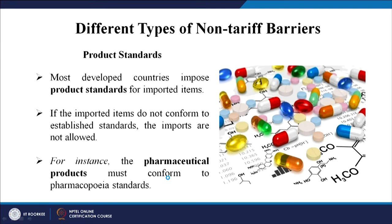Some other types of non-tariff barriers include product standards, which are very important. Most developed countries impose product standards for imported items — the product should meet a particular quality or standard. If imported items do not conform to established standards, the imports are not allowed. For example, pharmaceutical products must conform to pharmacopoeia standards, and this is also applicable to many other industries.